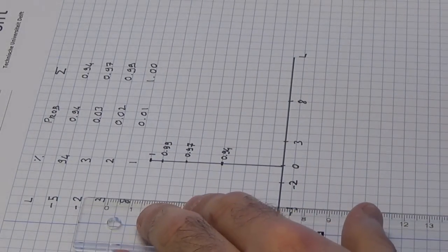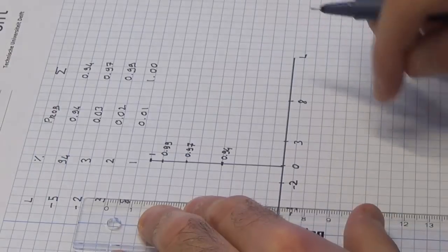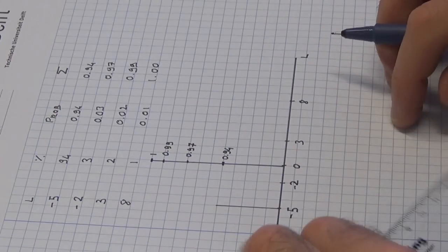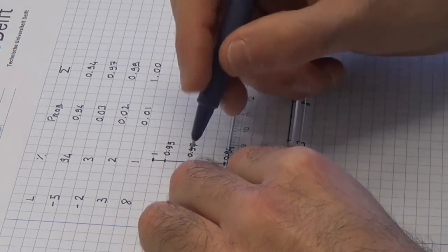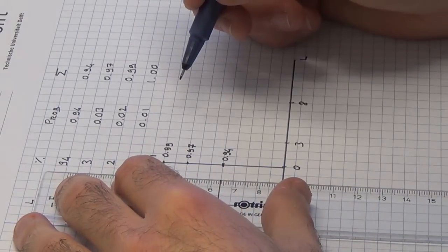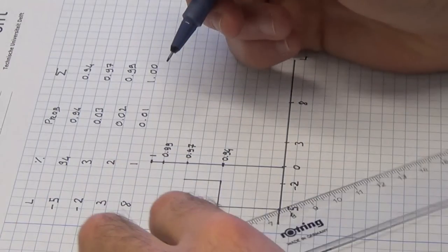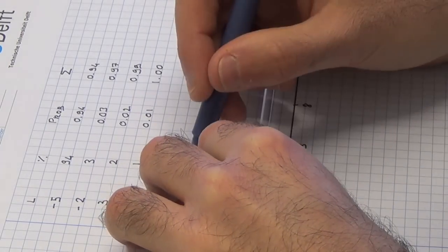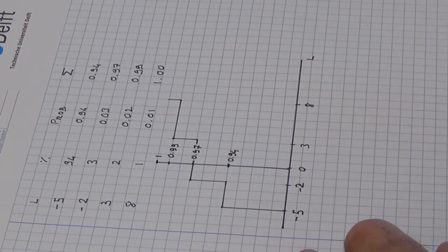Now we start with the smallest loss, minus 5. The corresponding cumulative probability is 0.94. This means that we can draw a vertical segment going from the x-axis at minus 5 to the point minus 5, 0.94. Then we know that the cumulative probability does not change until we reach minus 2, where it increases to 0.97. Hence, we first have a horizontal segment and then a vertical one. And so on, so that we can draw the entire empirical cumulative distribution function, also known as ECDF.